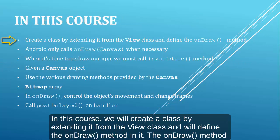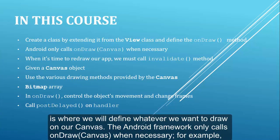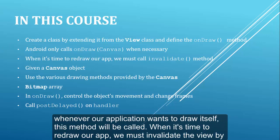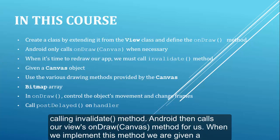In this course we will create a class by extending it from the View class and will define the onDraw method in it. The onDraw method is where we will define whatever we want to draw on our canvas. The Android framework only calls onDraw when necessary. When it is time to redraw our app, we must invalidate the view by calling the invalidate method.